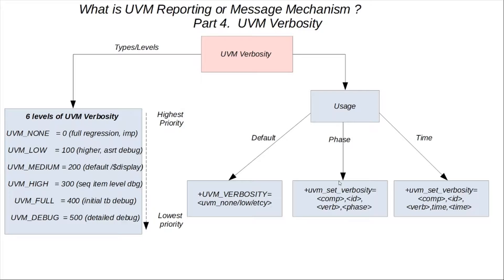You can also use the command line argument plus uvm_set_verbosity with its four arguments: component, id, verbosity, and phase. This can change the verbosity for a particular component through the command line. You can also set the verbosity of a given component after a particular time using a similar command that takes component, id, verbosity, and time as arguments — so after that particular time, the verbosity will change to high, low, or however you want to set it.